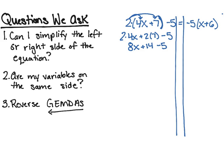I can still simplify because I have positive 14 and minus 5. So I'm going to bring down my 8x and say that positive 14 minus 5 is going to give me plus 9. Now the left side of my equation is completely simplified.